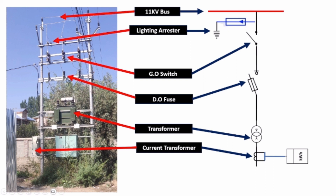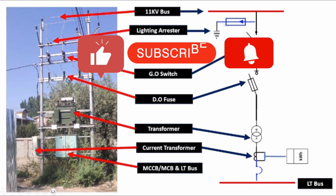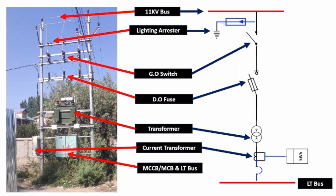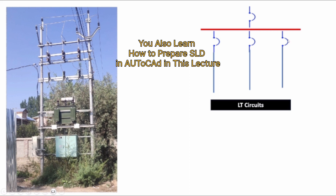From the meter box, the connections are going to this box, which is called the low tension distribution box — LTDB. The connections from the meter box get first connected to the MCCB, that is the 3-pole MCCB. The symbol of this is like this. From the MCCB you can see the LT bus is created here, represented by a straight line. From the bus, 3, 2, or 4 LT circuits are going outside of the LT distribution box. Each circuit has its own MCCB — this is the main MCCB and these are the individual MCCBs.